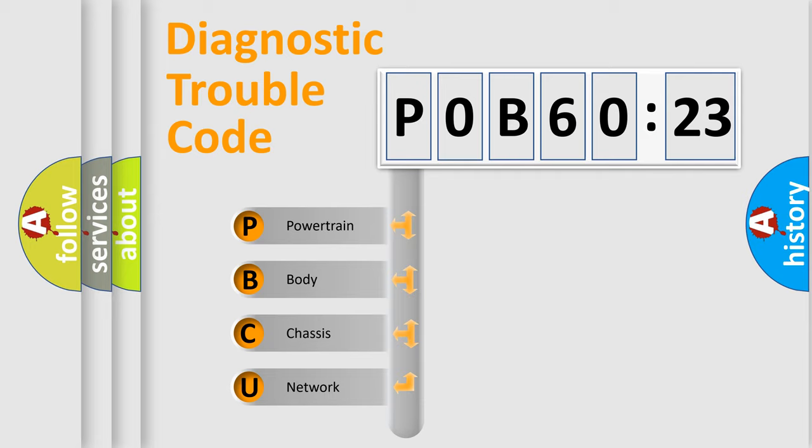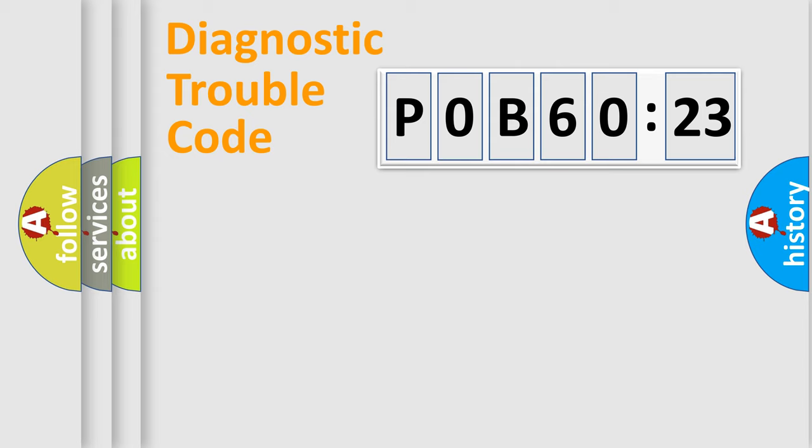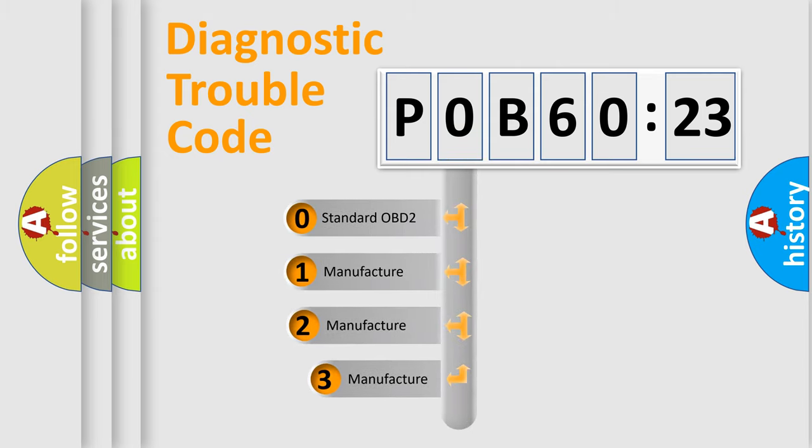We divide the electric system of automobile into the four basic units: Powertrain, Body, Chassis, Network. This distribution is defined in the first character code.